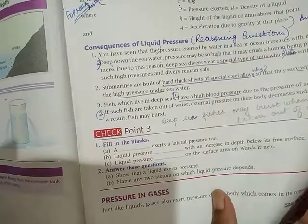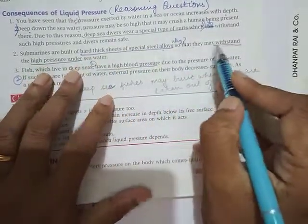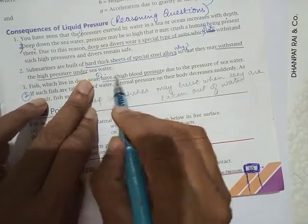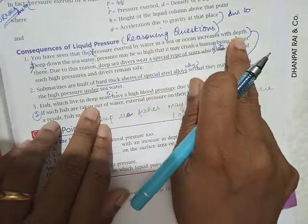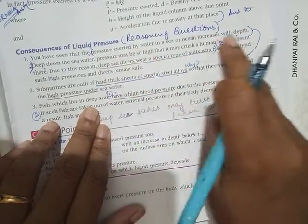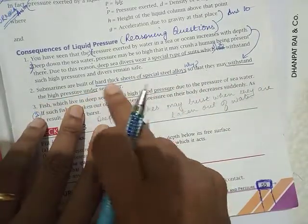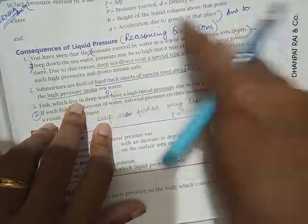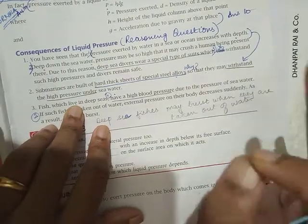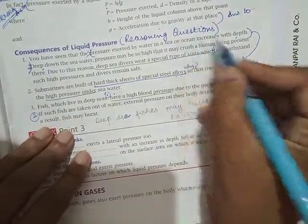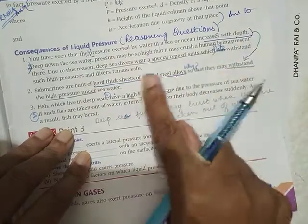And even submarines built with hard thick sheets of special steel so that they may withstand high pressure under sea water. It will be better if you write pressure exerted by water increases with depth. That is the main reason. Therefore, to withstand that high pressure, they are made of thick sheets. This is the technical answer, the physics part of the thing, and this is the practical part of it. So both should be there especially in reasoning questions.